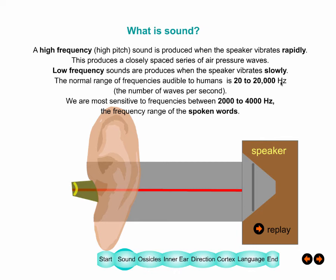As you get older, this frequency range starts to compress. I've heard that some students can ramp speakers on their iPhones to very high frequencies to chat with each other during exams without older professors noticing. You're most sensitive to frequencies between 2,000 and 4,000 Hz — these are the frequencies of most spoken words.